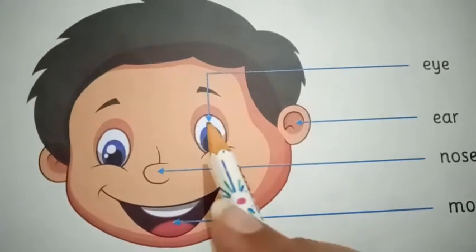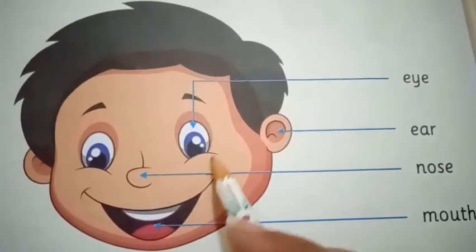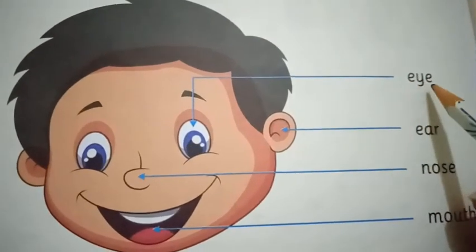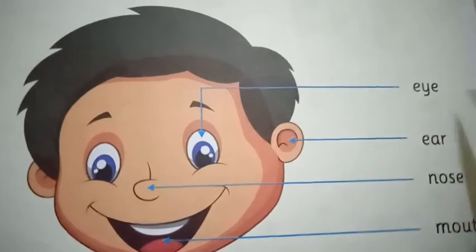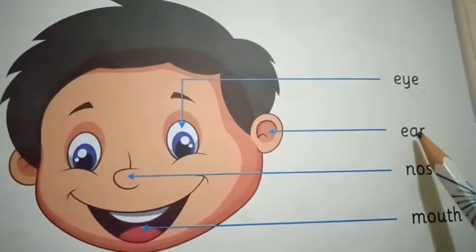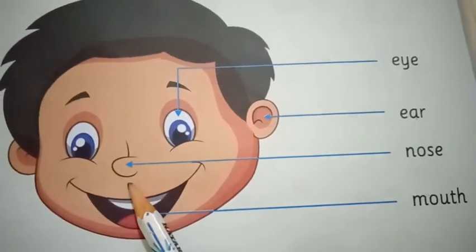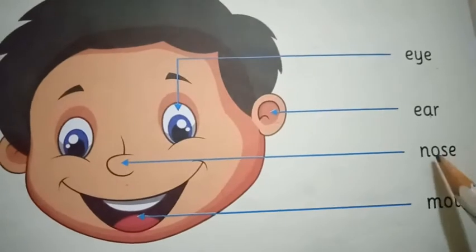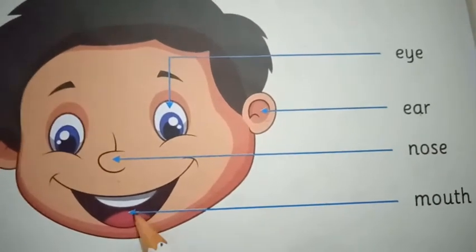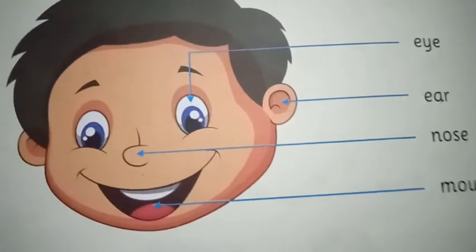So here is eye — E-Y-E. This one, ear — E-A-R. Here, nose — N-O-S-E. Here is mouth — M-O-U-T-H.